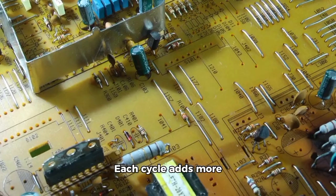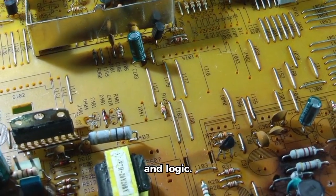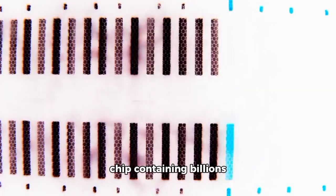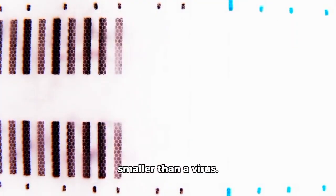Dozens of times, each cycle adds more transistors, wiring, and logic. When the process finishes, the result is a chip containing billions of perfectly aligned transistors, each one smaller than a virus.